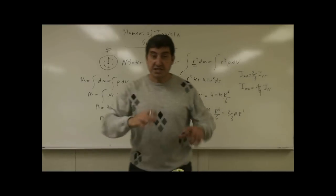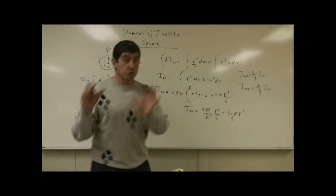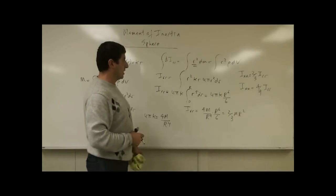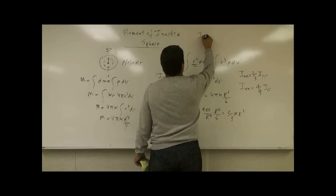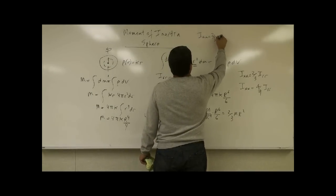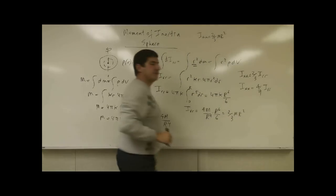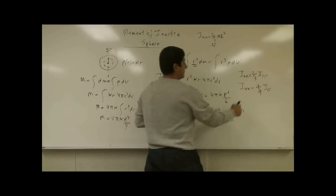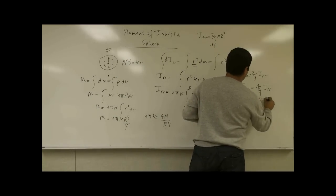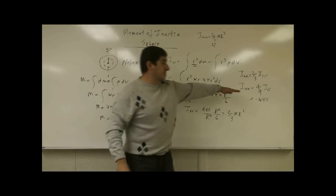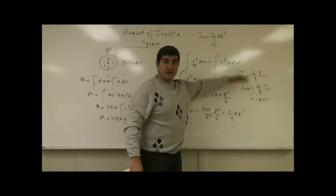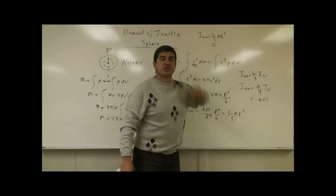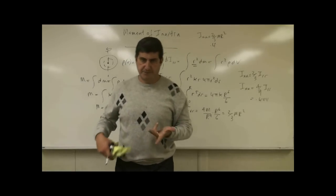So if you race this down the hill with a uniform solid sphere what's going to happen? Well uniform solid sphere was 2 fifths m r squared. That's a ratio of 0.4. This is a ratio of 0.444. So of course this is harder to rotate than that. So the uniform solid sphere will win.